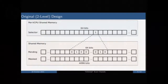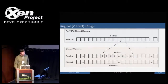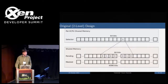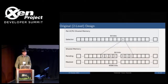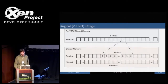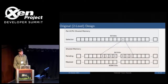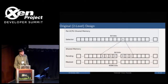The thing that limits the number of event channels you can have is the layout and structure of the shared memory. This is the current layout: the shared memory has an array of bits to indicate a pending event — 4096 bits on a 64-bit guest, so at most 4096 events. There's also an equivalent array of masked bits that a guest uses to prevent delivery of a specific event. To avoid scanning all 4096 bits on every event, on a per-vCPU basis there's a 64-bit selector word, where each bit corresponds to a word within the shared memory.